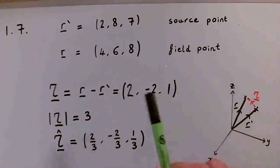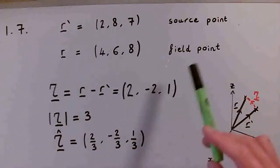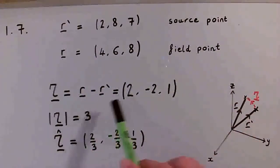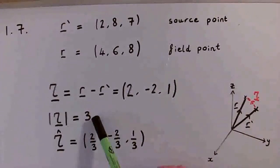So this is just a summary of our results. For this source point R prime and this field point R, we have a separation vector of (2, -2, 1), which has a magnitude of 3.